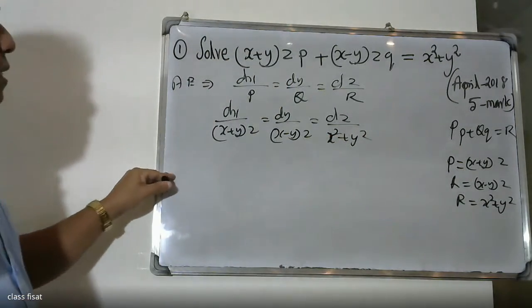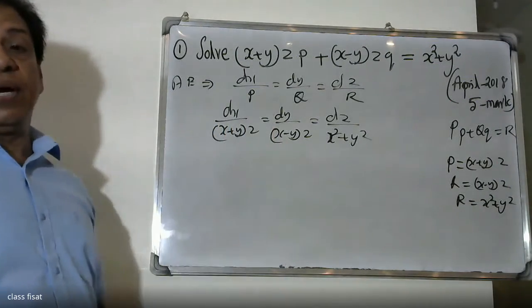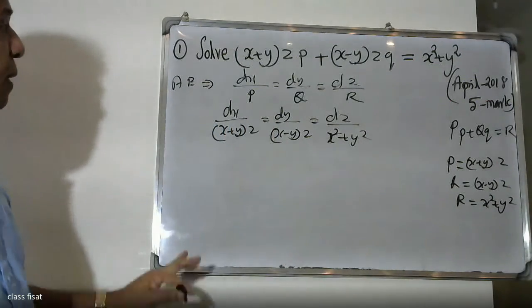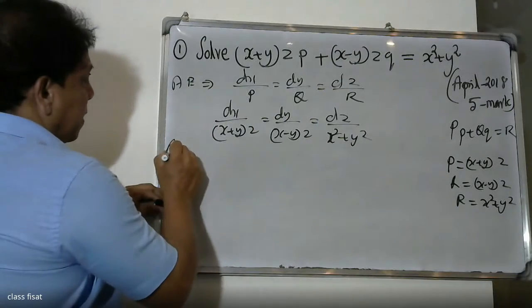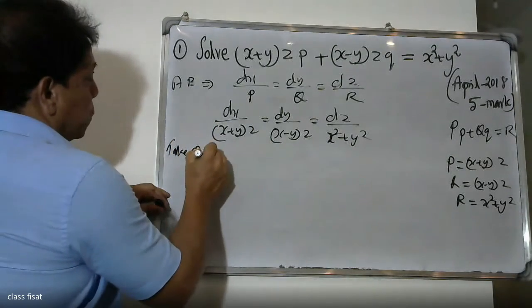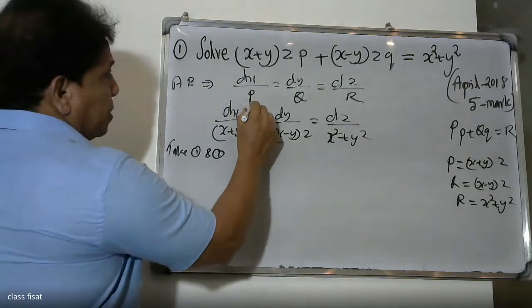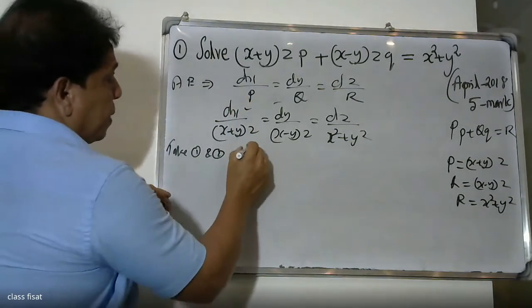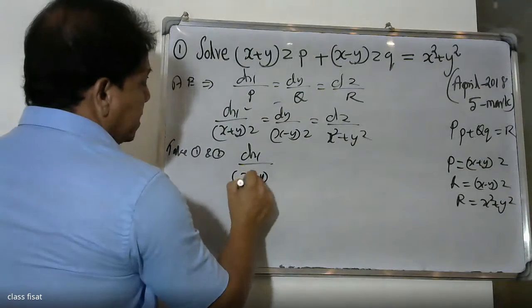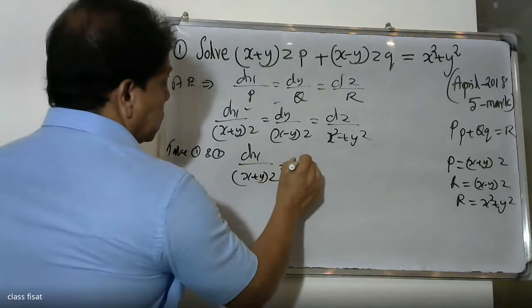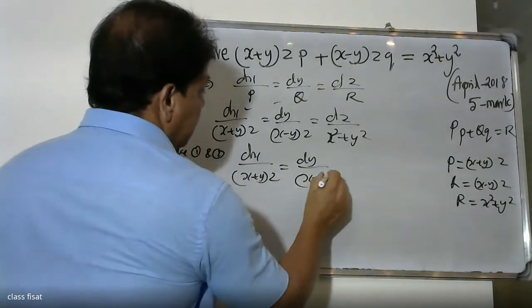This is the Lagrange constant A and B control here. This is the first ratio. Take ratio 1 and ratio 2. The first ratio equals the second ratio.